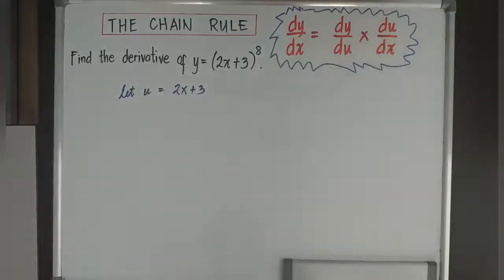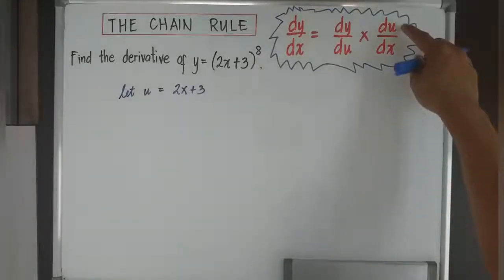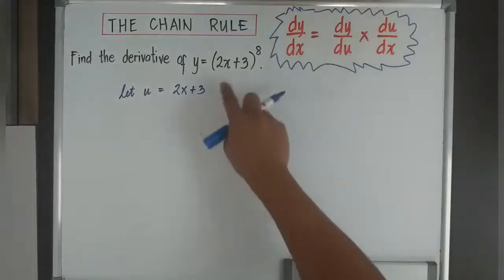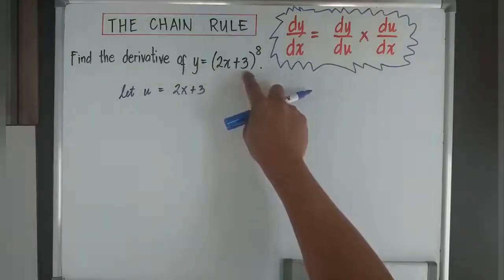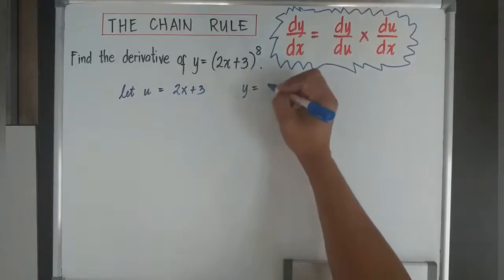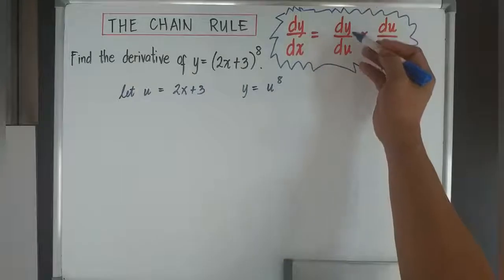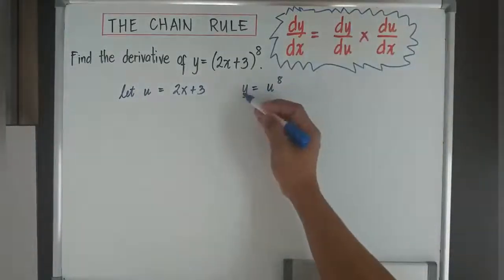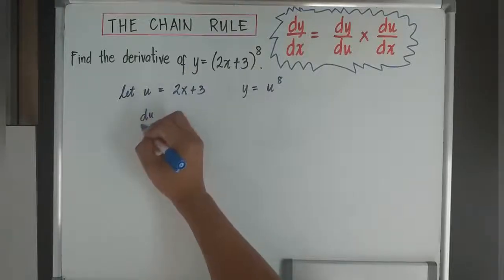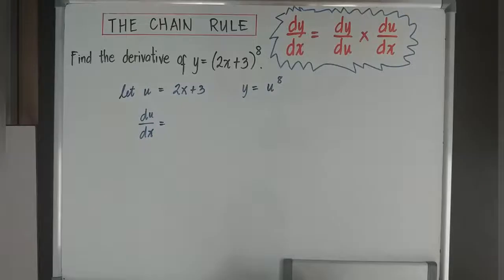After that, I am going to get the derivative of u in terms of x. I will get du over dx. Since I let u become 2x plus 3, then y is equal to u to the power of 8. The derivative of u in terms of x, du over dx, is equivalent to 2.